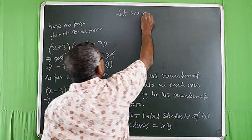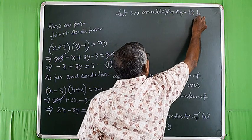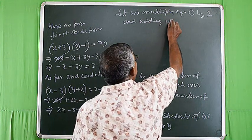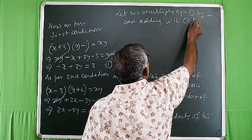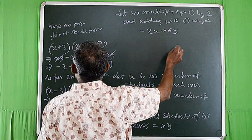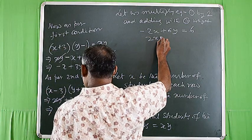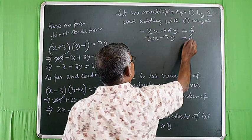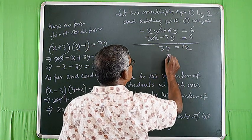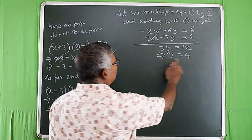Students, let us multiply equation number 1 by 2 and add with equation 2. Multiplying equation 1 by 2: -2x + 6y = 6. From equation 2: 2x - 3y = 6. Adding these we get 3y = 12, which implies y = 4.